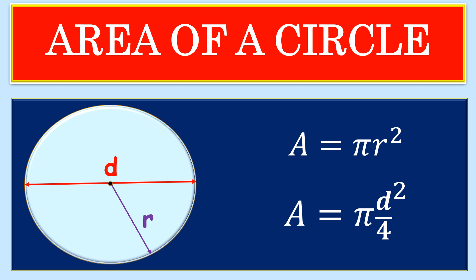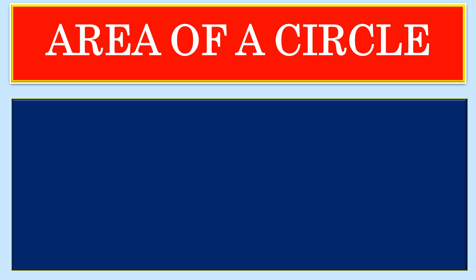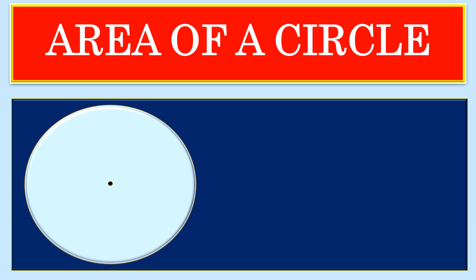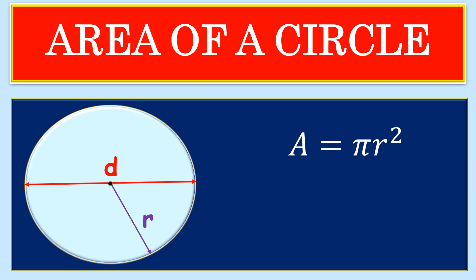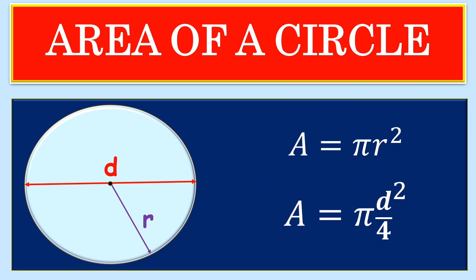Welcome back viewers. Today we'll be looking at how to calculate the area of a circle. We will be considering the area of a circle, looking at two things. The first is having a diameter, and secondly, if we are given the radius. The area considering the radius is equal to pi r squared, and the area considering the diameter is pi d squared over 4.